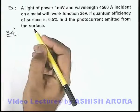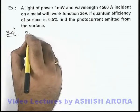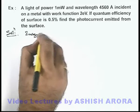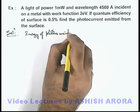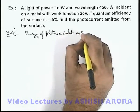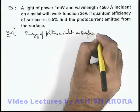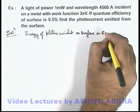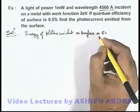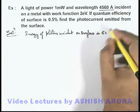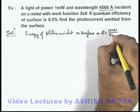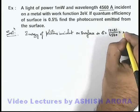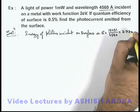In this situation we can directly calculate the energy of photons incident on surface. This energy is corresponding to the wavelength 4560 angstrom, so it can be written as 12431 by 4560, which on calculation gives 2.72 electron volts.